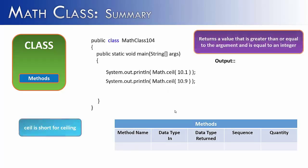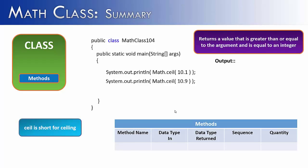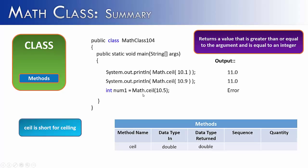Floor's counterpart is ceil, short for ceiling. It returns a value greater than or equal to the argument equal to an integer — it rounds up. If there is a value past the decimal place, it rounds up, returning 11.0. The method name is ceil, data type in is a double, and it returns a double. Just like floor, trying to store it as an int without a typecast is wrong. With the typecast, we get the correct value of 11. Sequence doesn't apply; quantity is 1.